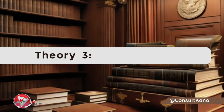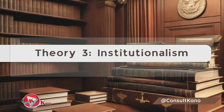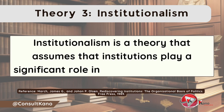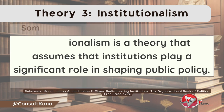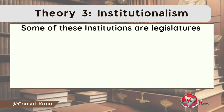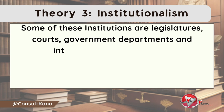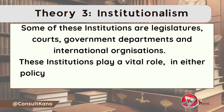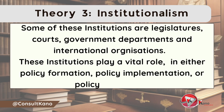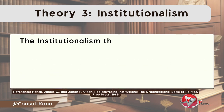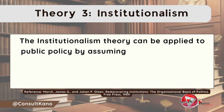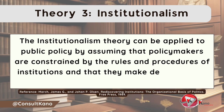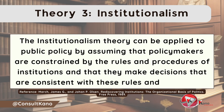The next public policy theory we'll be discussing is institutionalism. Institutionalism is a theory that assumes that institutions play a significant role in shaping public policy. Some of these institutions are legislatures, courts, government departments, and international organizations. These institutions play a vital role in either policy formation, policy implementation, or policy evaluation. The institutionalism theory can be applied to public policy by assuming that policymakers are constrained by the rules and procedures of institutions, and that they make decisions that are consistent with these rules and procedures.